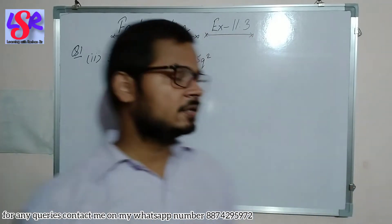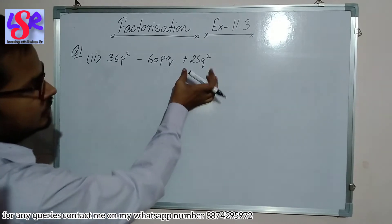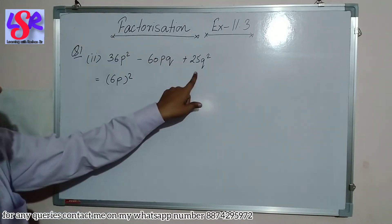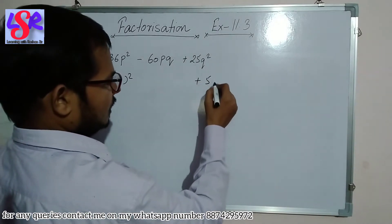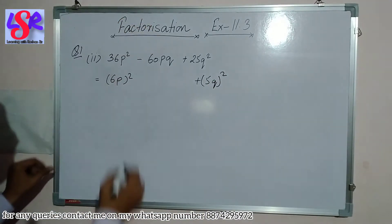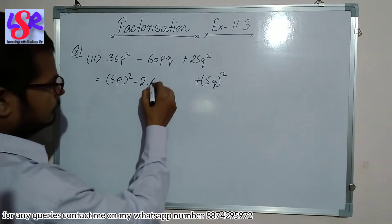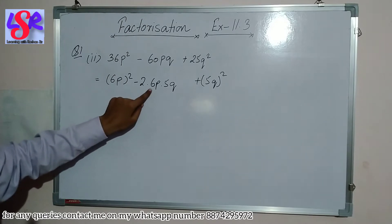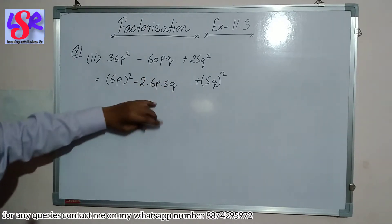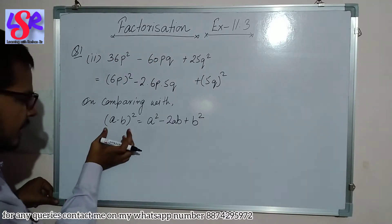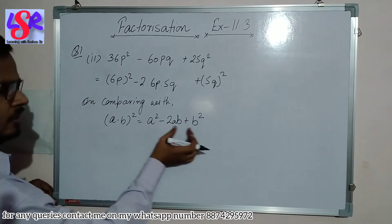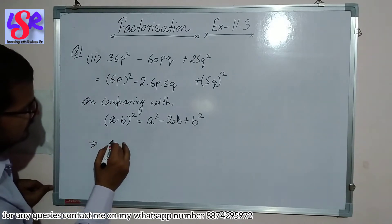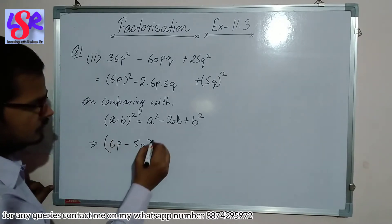Now let's see the second part: 36p²-60pq+25q². This can be written as (6p)² plus (5q)², and we split the middle term as minus 2×6p×5q. Checking: 2×6×5=60 and p×q=pq, so this matches. Comparing with (a-b)²=a²-2ab+b² with a=6p and b=5q, this factorizes to (6p-5q)² as the answer.